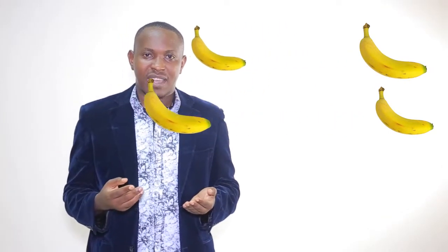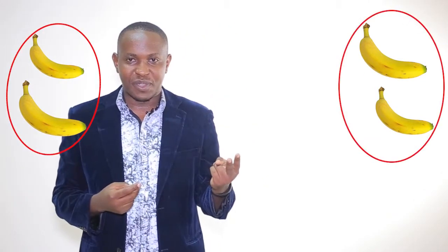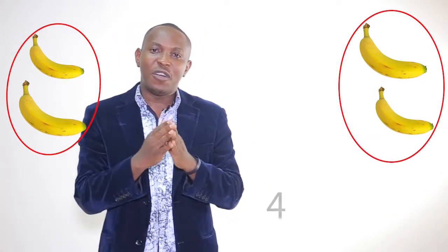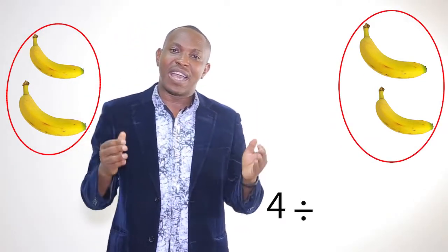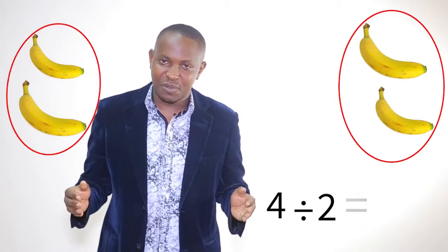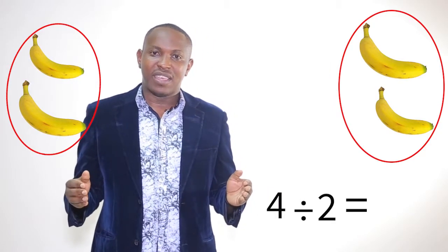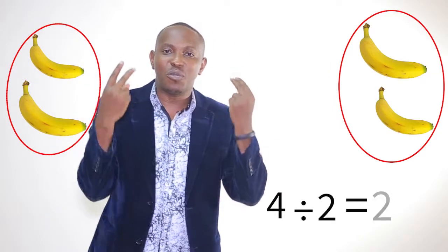Later on, she came with four bananas, shared still by two people. She gave me two. She remained with two. Four divided by two is two.